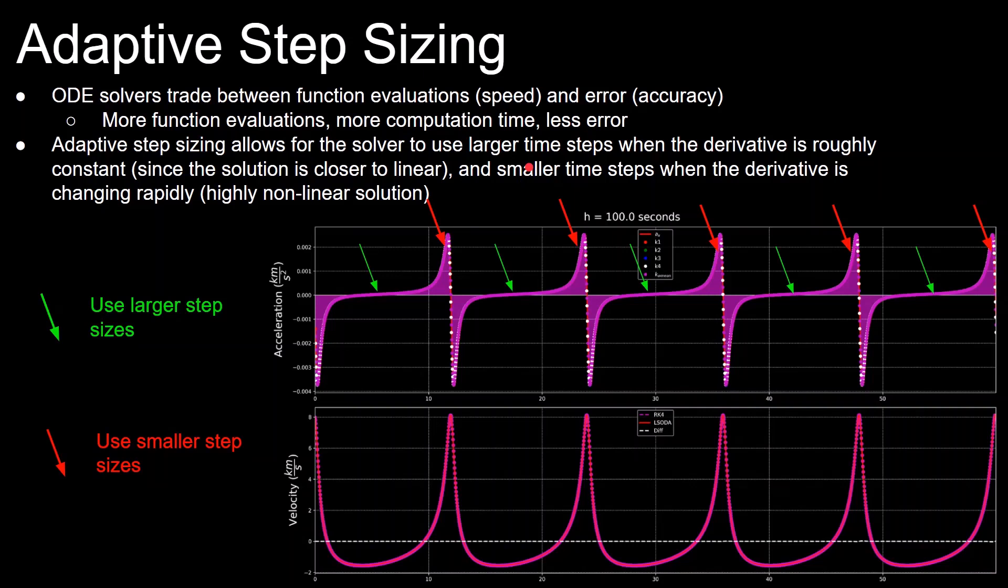So when the solution to a differential equation is approximately linear, this means that the derivative is roughly constant. So even just using Euler's method will yield you a good estimate of the solution with larger time steps. Therefore, when the derivative is relatively constant, an ODE solver can use larger time steps without sacrificing accuracy. And in the case of this highly eccentric orbit, a solver would use a larger time steps in the places labeled with the green arrows.